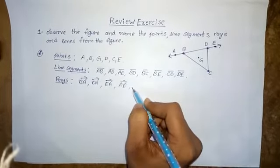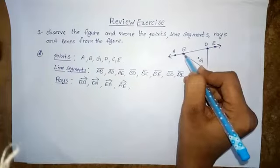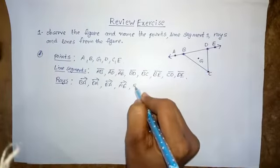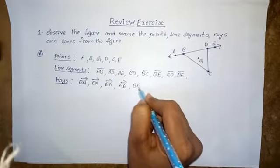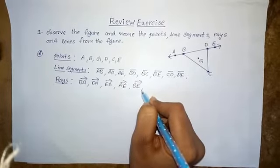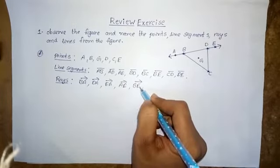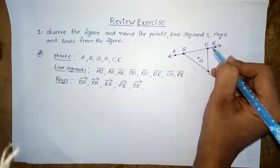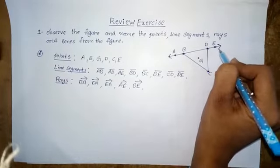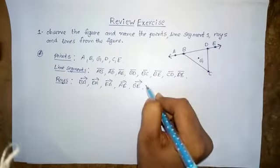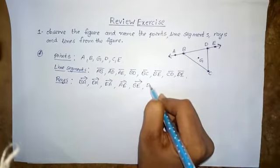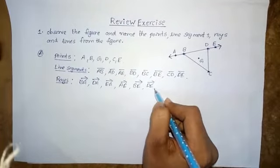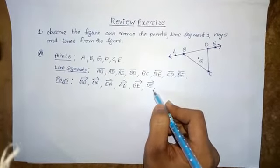From point B to E — BE is a ray, moving endlessly in that direction. DE is also a ray. These are all the rays involved in this figure.